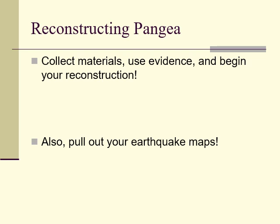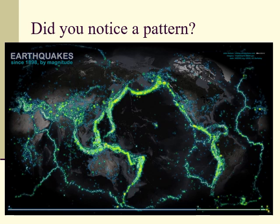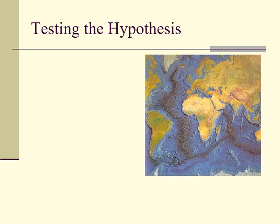If we were in class right now, I would have given you puzzle pieces and let you reconstruct Pangaea, and we would have taken a look at your earthquake maps so we could start to see how the earth really is made. Speaking of your earthquake maps — did you guys notice patterns? These are the places that most earthquakes occur. These are earthquakes by magnitude since 1898. What you'll notice is that the earth is broken up into plates, and earthquakes happen at the boundaries of those plates.